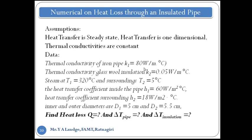The given data: K1 = conductivity of the pipe, K2 = conductivity of the insulating material, T1 = 320°C (inside steam temperature), T2 = 5°C (outside temperature), H1 = 60 W/m²·°C (inner heat transfer coefficient), H2 = 18 W/m²·°C (surrounding heat transfer coefficient), inner diameter D1 = 5 cm, outer diameter D2 = 5.5 cm. We need to find: (1) the value of Q (heat loss), and (2) the temperature drop across the pipe and across the insulation.